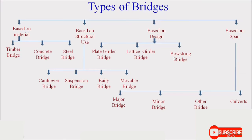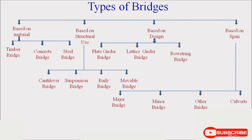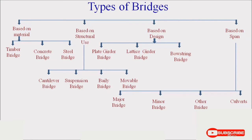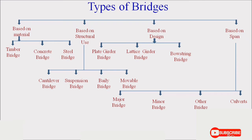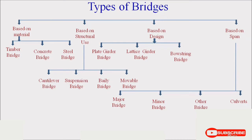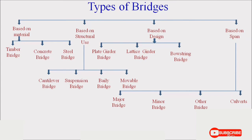Based on design: plate girder bridge, lattice bridge, and busting bridge. These are types of girders — a girder is essentially a beam — so these are the types of beams used in construction. Based on span: major bridge is constructed where the span is more than 45 meters; minor bridges are constructed when the span is 30 to 45 meters; other types of bridges are for span less than 30 meters; and culverts are constructed when the span is very less, more than 6 meters. This is the overall classification of bridges.